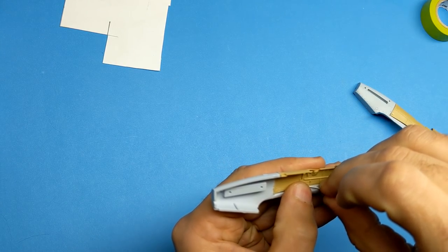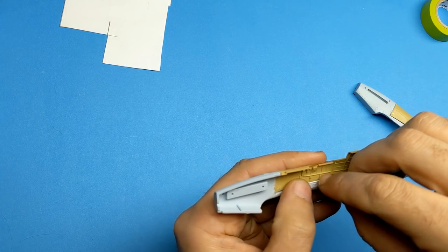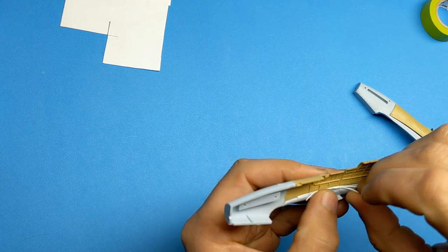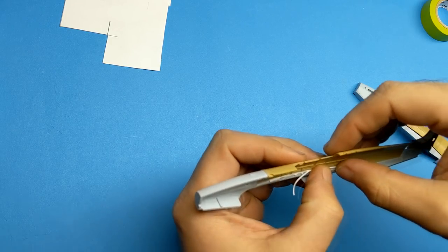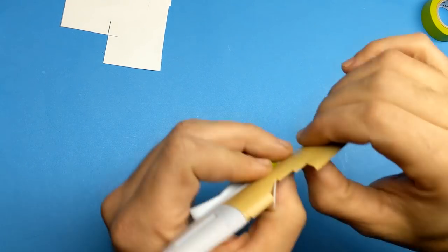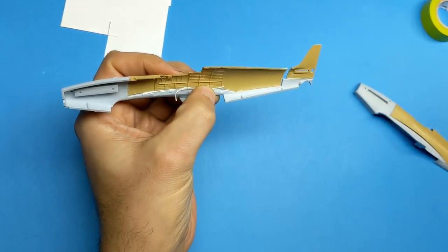With the fuselage parts now grafted together, it's now time to start filling some gaps, and to do this I'm using slices of styrene sheeting and super glue from the inside of the aircraft. Once this is all dried and hardened up, I'll come in with some 600 and then 3000 grit sanding sponge to start cleaning up the aircraft.